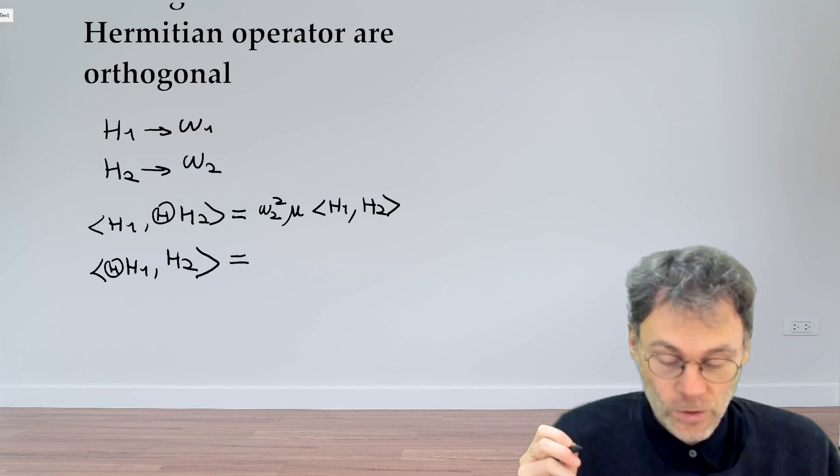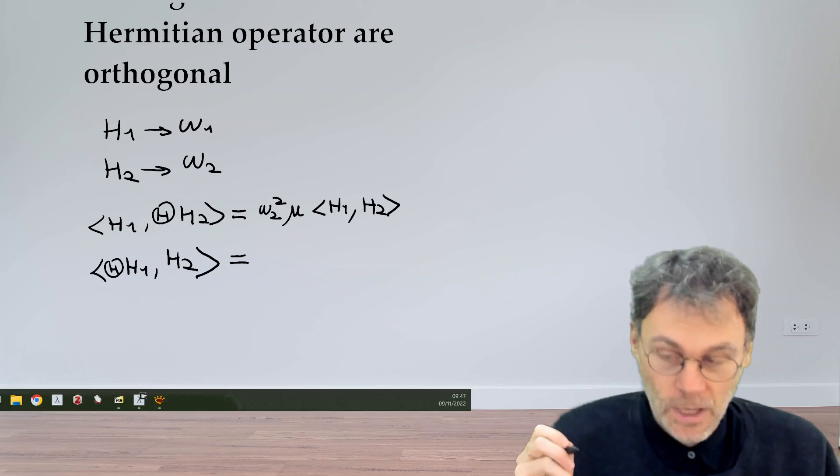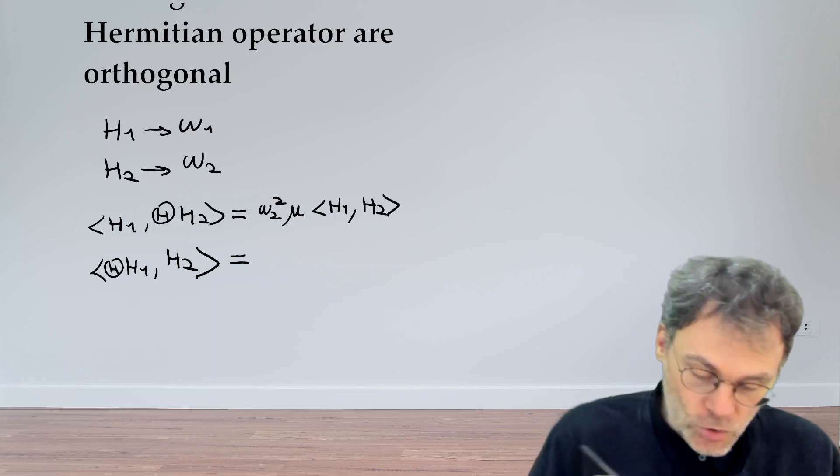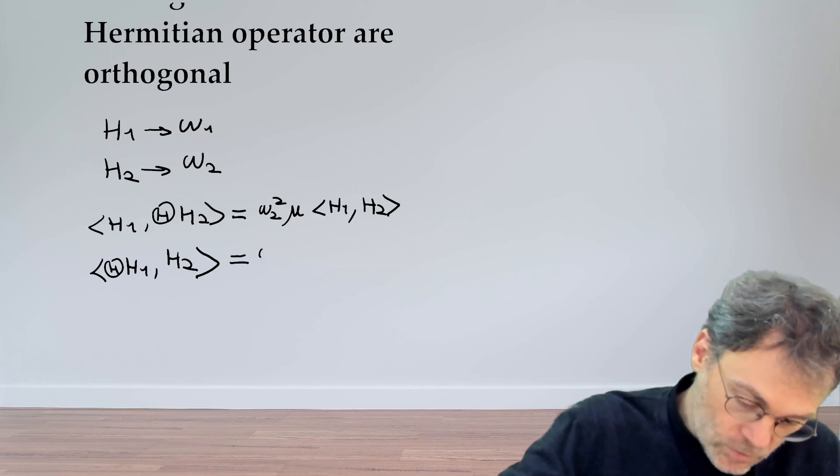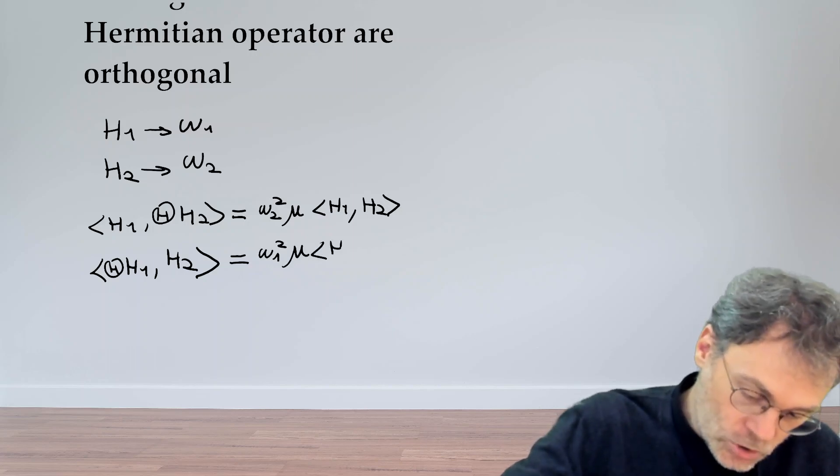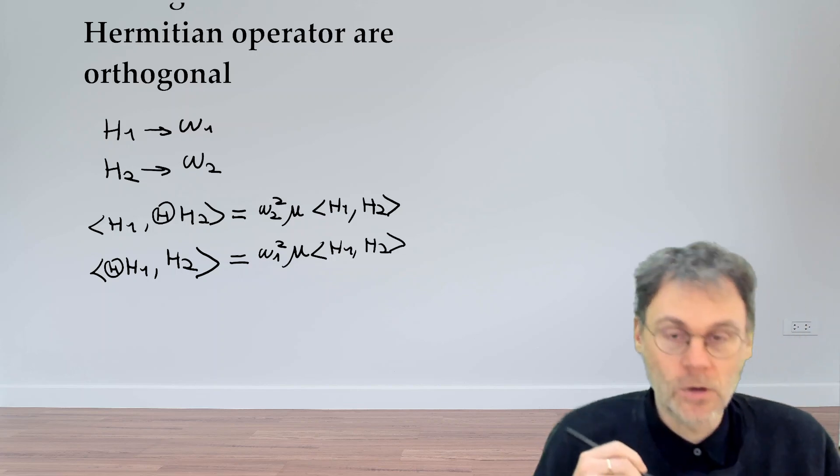And let's do the same thing for the second equation. If we have an eigensolution H1, that will give us an eigenvalue omega 1 squared mu H1 H2.